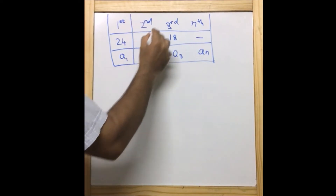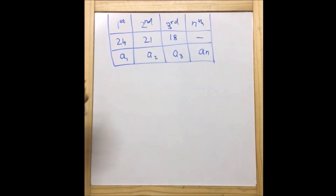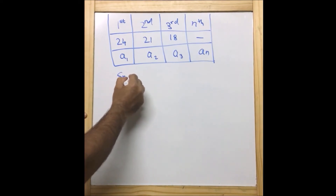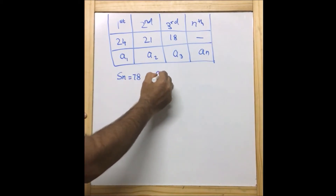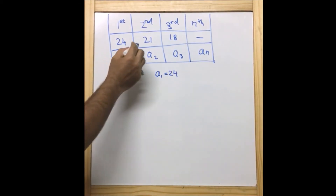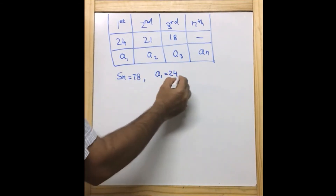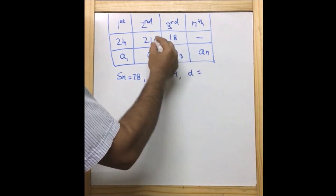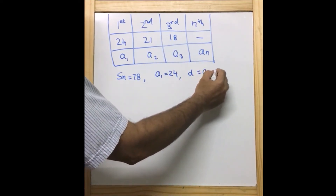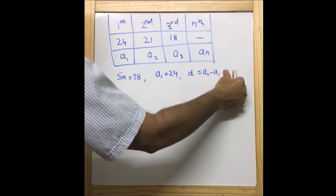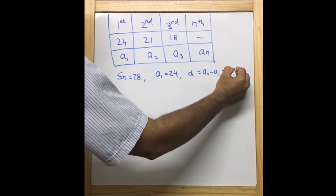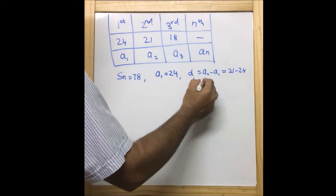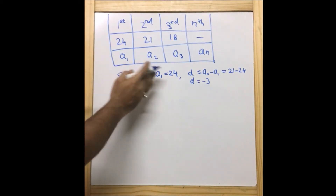One more piece of data we have is Sn. As per the question, they want us to find what terms we are adding to get 78, so Sn = 78. We also know a1 = 24. We can also find the common difference d. d = a2 minus a1 = 21 minus 24, which gives d = -3. So we have Sn = 78, a1 = 24, and d = -3.